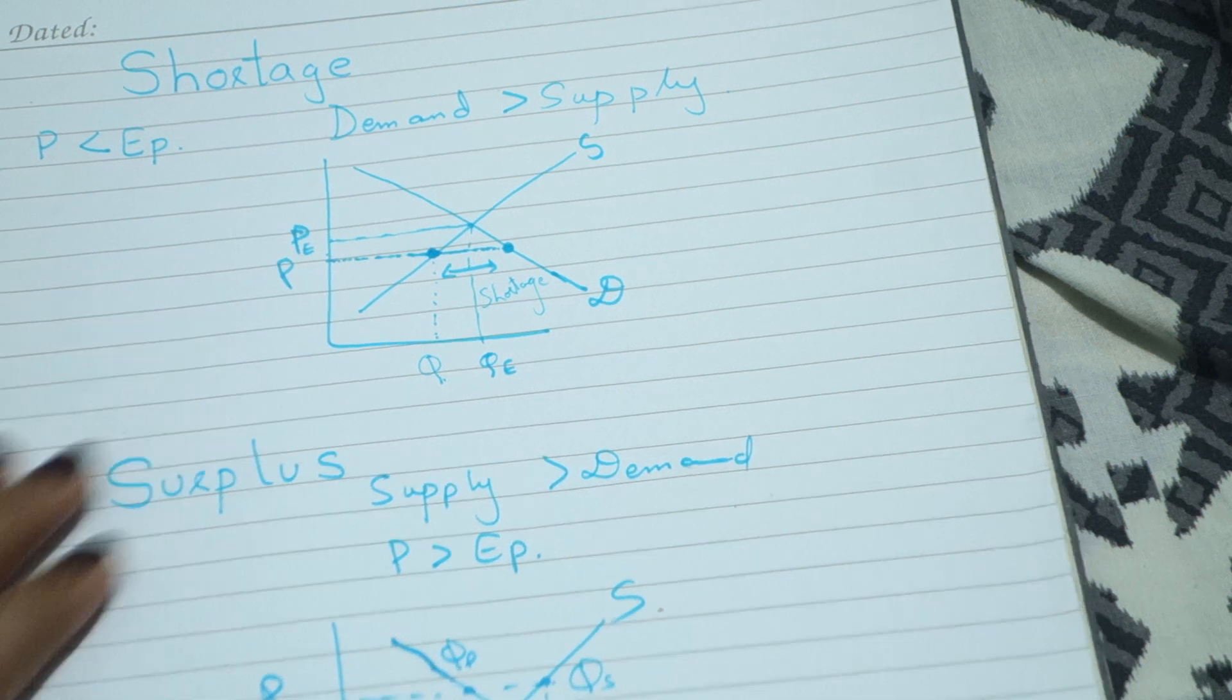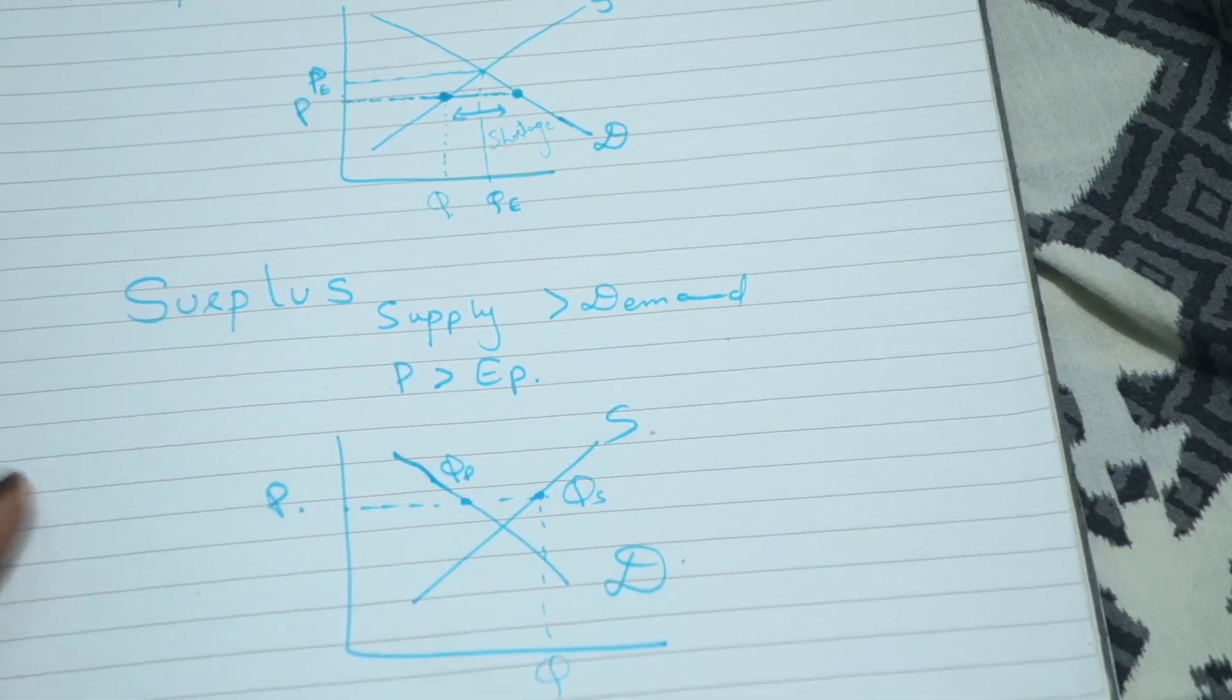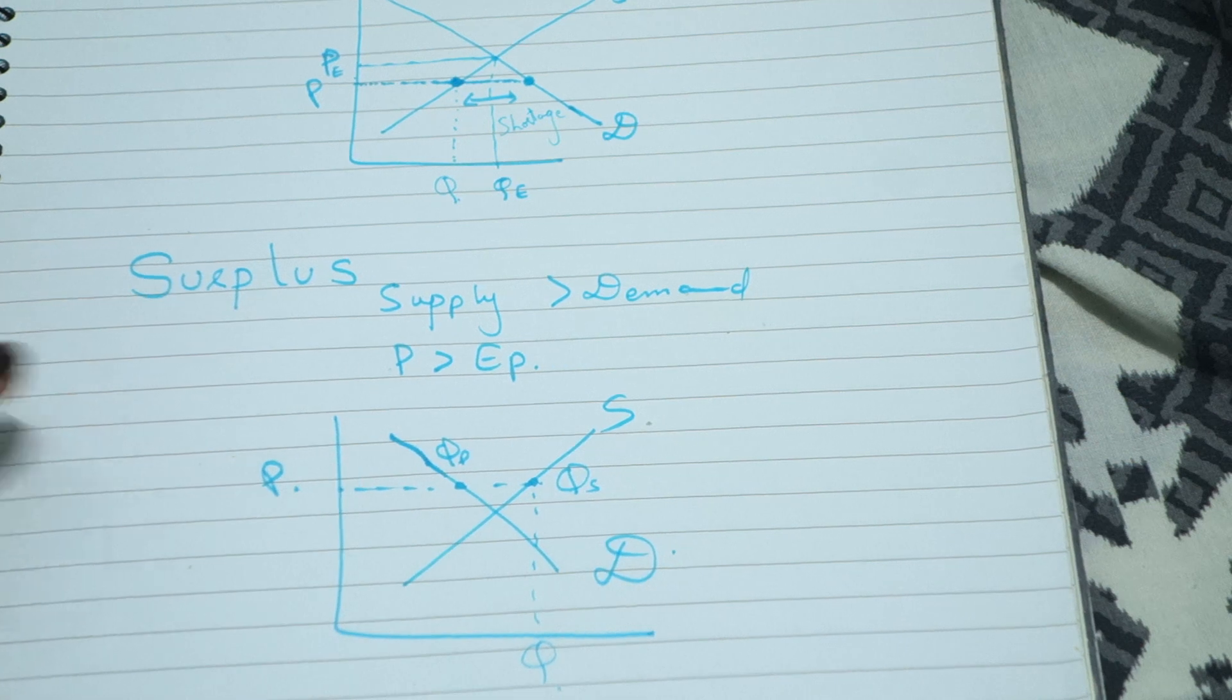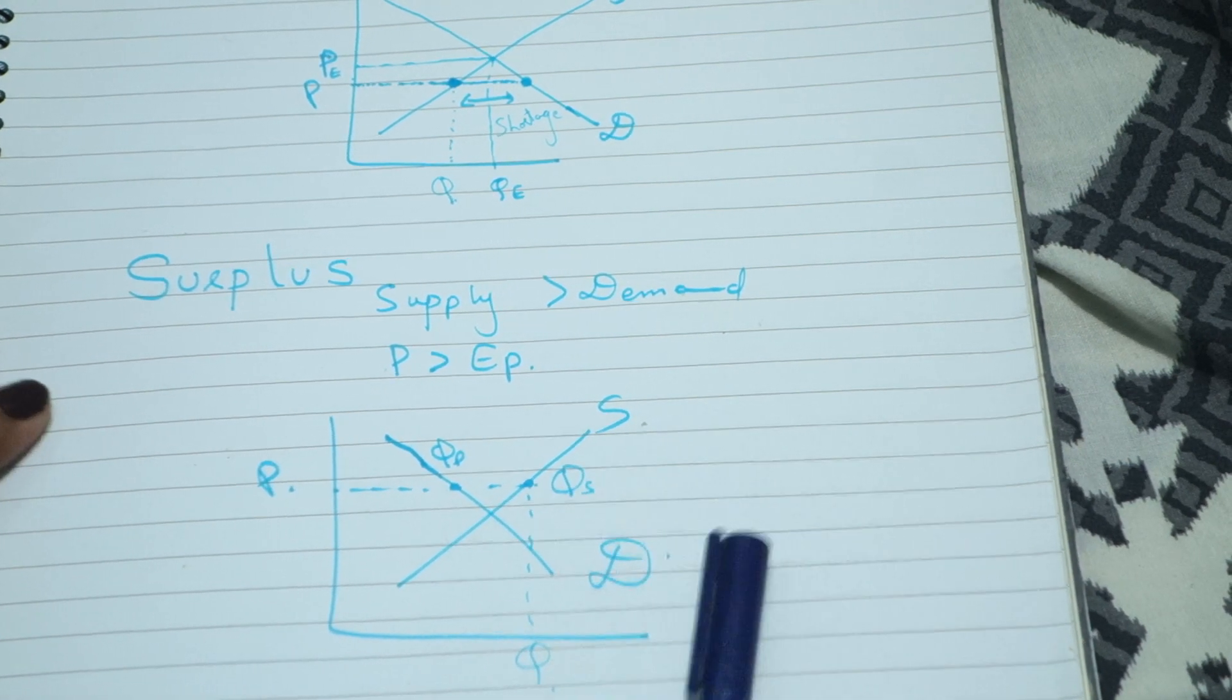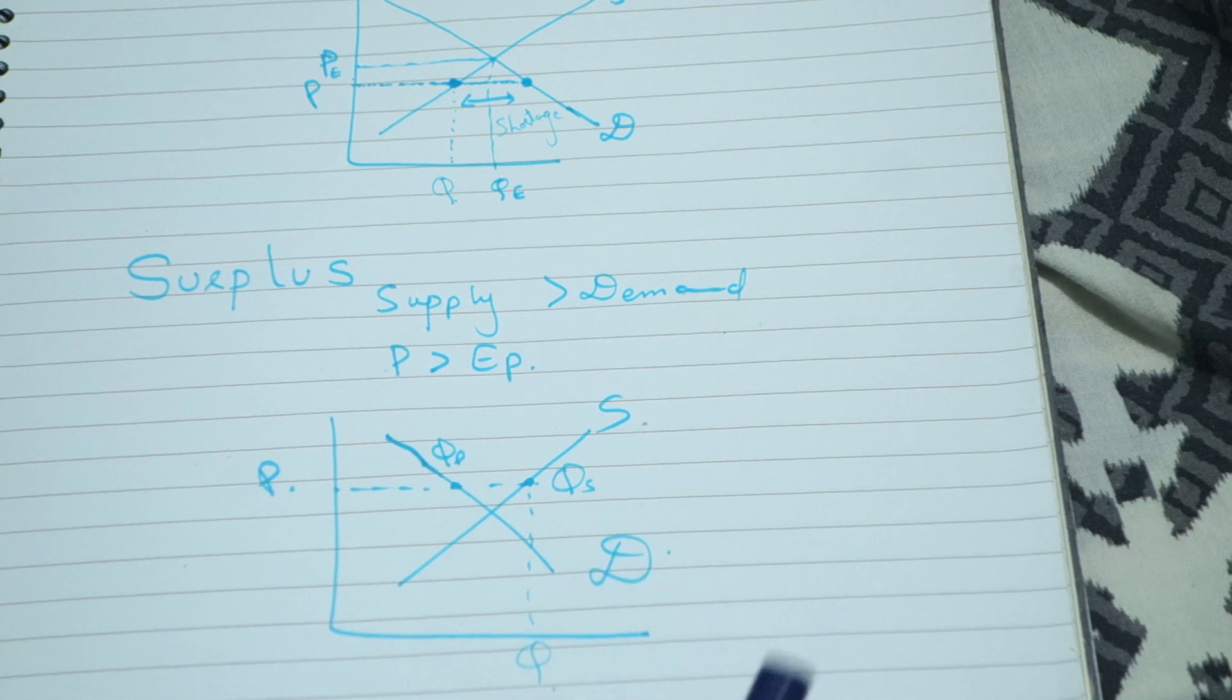Ab surplus. Surplus jaise naam suggest kar raha hai ki koi cheez zyada hona. Toh ye tab hoti hai jab aapki supply jo hai wo demand se zyada ho. Jab supply demand se zyada ho, toh market me zyada product hai aur log nahi kharid rahe hain un products ko.